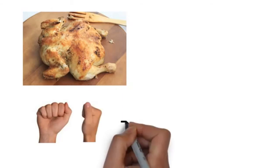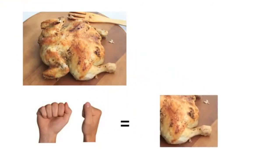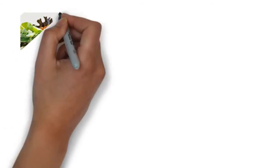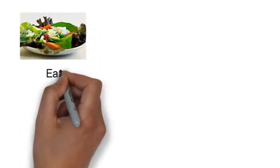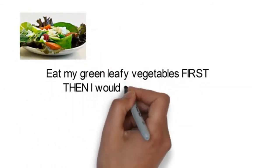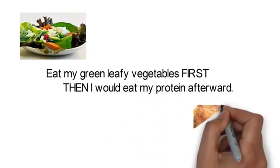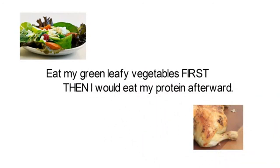I personally tend to eat about one and a half fist-sizes of chicken, otherwise I get hungry later on. The way I eat my salad is to always eat the green leafy vegetables first, then the protein after. When you eat the green leafy vegetables first, you're more likely to feel full compared to eating the chicken before the vegetables.